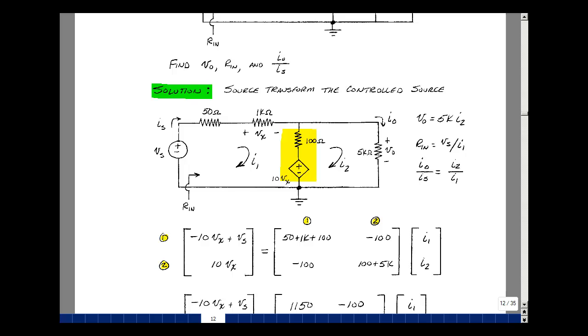Since I have two meshes, I'll form a blank two-by-two matrix. Then on the left-hand side of the equation, I'll put a blank vector column of two rows in one column. What goes in row one, column one is the sum of the resistances in mesh one. So that's 50 plus 1,000 plus 100. What's common between meshes 1 and 2 is 100 ohms, so that'll go in row one, column two, but we're going to negate the sum of the common resistances. And if I go around the mesh counterclockwise, I can record all the drops in voltage that I see. So I see a minus 10 V sub X plus V sub S.